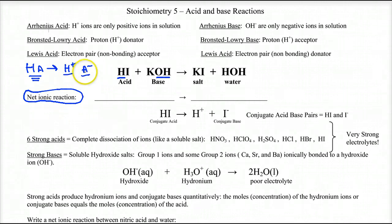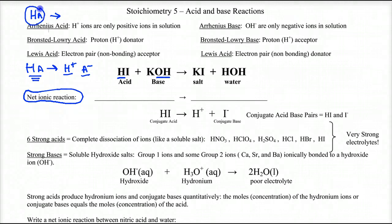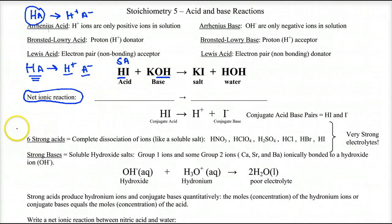The conjugate base is what's left over. Now, if you've got a weak acid, not all of those molecules — in fact, very few — actually dissociate. You have to know the differences here. HI is a strong acid, and there are several you have to know.